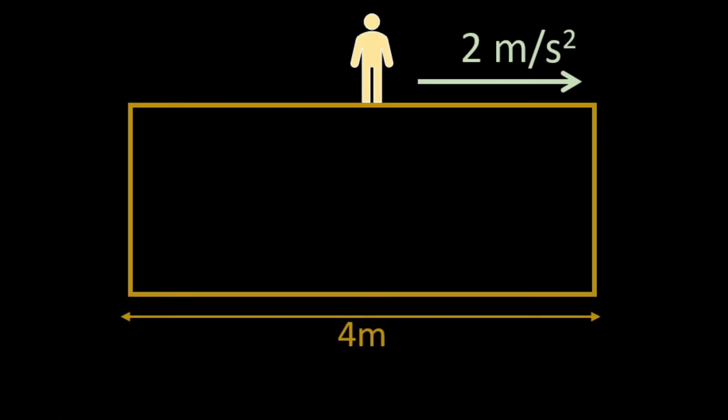So this is the rocket of length 4 meters and it's moving with an acceleration of 2 meters per second squared. We are looking at the problem from the rocket frame. As given in the question, the two particles, A and B, are moving with velocity 0.3 meters per second and 0.2 meters per second, that is with respect to the rocket, and we want to look at everything with respect to the rocket.